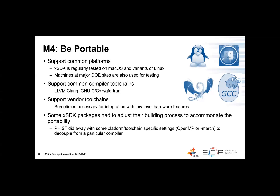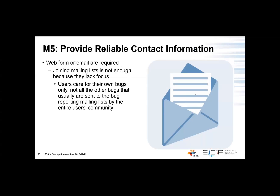Mandatory policy number five asks for providing reliable contact information for the package — either a web form or email are required. We specifically say that joining mailing lists for reporting bugs is not enough for this policy because mailing lists are usually not very well focused, and that would require users to scan specifically for their own bug among all the other bugs and issues reported on the mailing list.